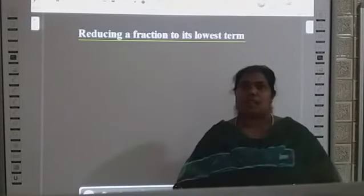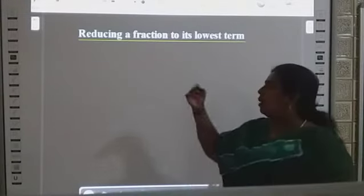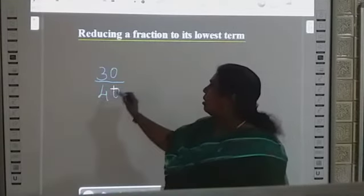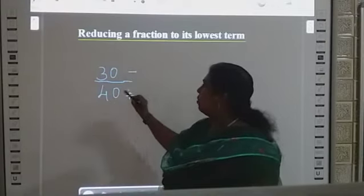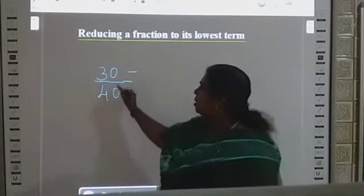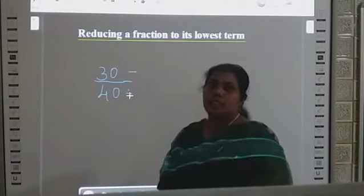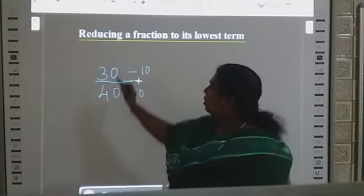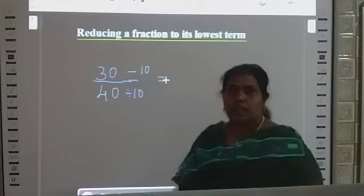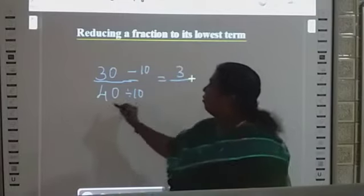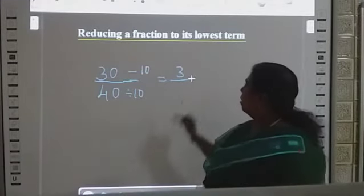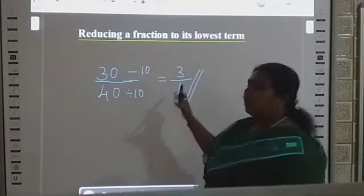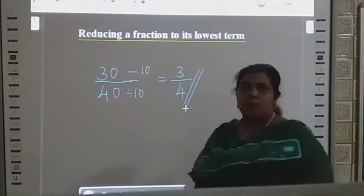Reducing fractions to lowest terms. For example, 30 divided by 40. We can reduce it easily. Both end in zero, so we can use the 10th table: 30 divided by 10 is 3, and 40 divided by 10 is 4. So the reduced fraction is 3 by 4.